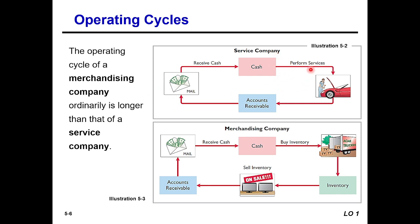For a service company, the cycle is: perform service, create a credit sale (accounts receivable), then receive cash. For a merchandising company, the cycle is longer: buy inventory, sell that inventory on credit (accounts receivable), and then receive cash. The extra step of buying and holding inventory makes the merchandising cycle longer.